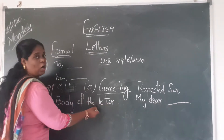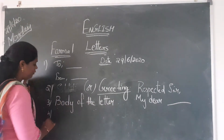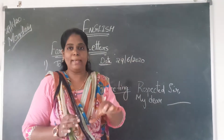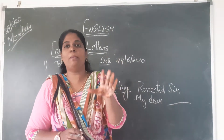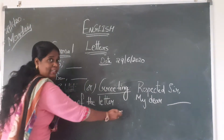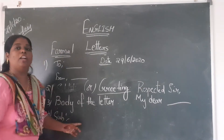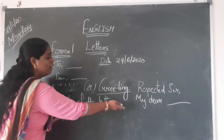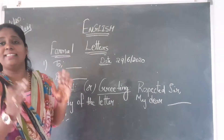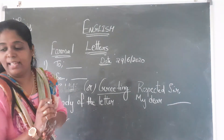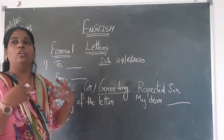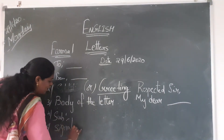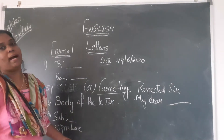The fourth part is the subject — about what you are writing. For example, if you are complaining about a certain thing, you write it here: what you are asking for or what complaints you are giving. And the last part is the closing: yours obediently or yours faithfully, followed by the signature.